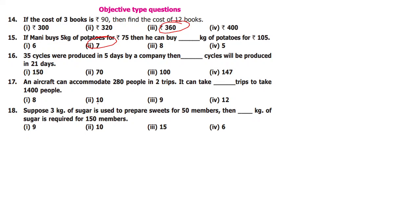35 cycles were produced in 5 days. How many cycles were produced in 21 days? So, the number of cycles is proportional to the number of days — 35 cycles in 5 days. How many cycles will you produce in 21 days?